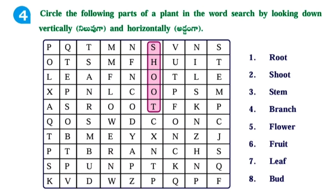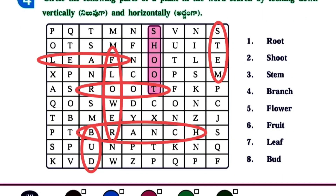Next one, circle the following parts of a plant in the word search by looking down vertically and horizontally. You have to search for the words: root, shoot, stem, branch, flower, fruit, leaf, and bud.